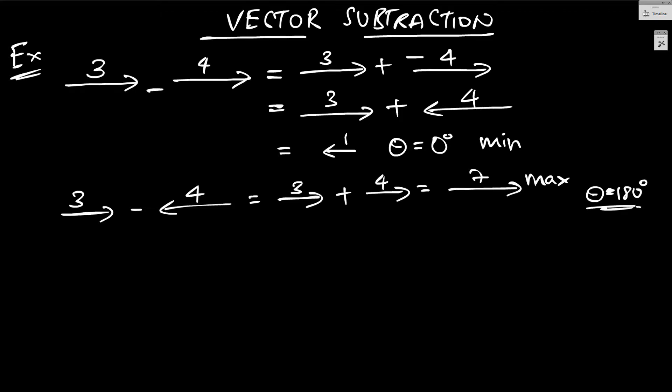So, you see, something similar is happening over here. Here, what we can say is, the magnitude of vector a minus b in general will also, just like the summation, lie between two numbers